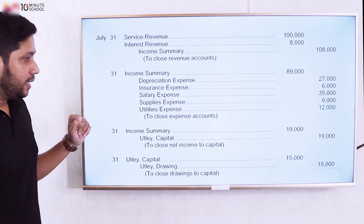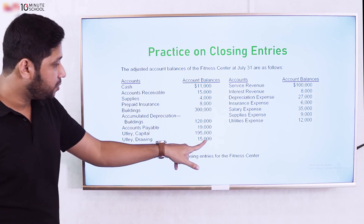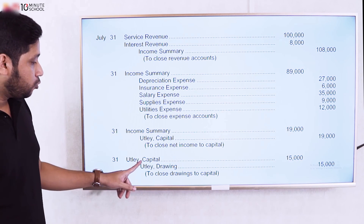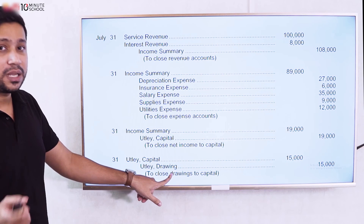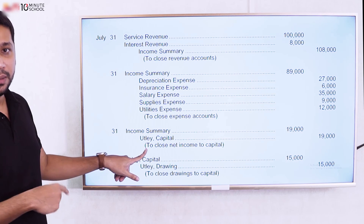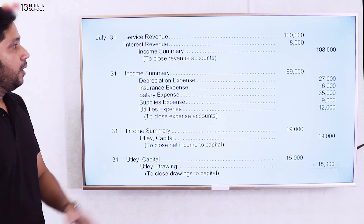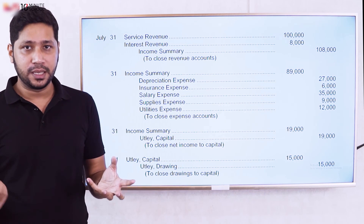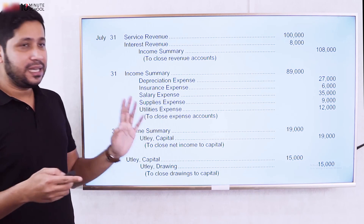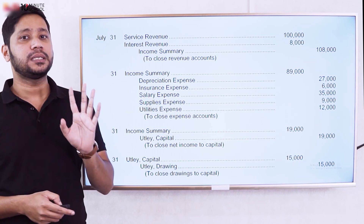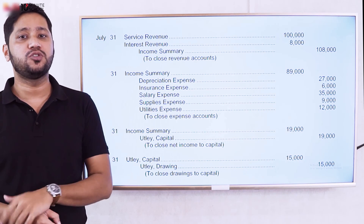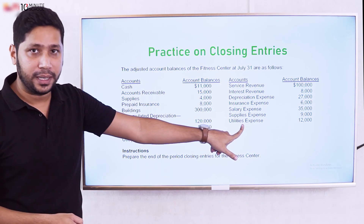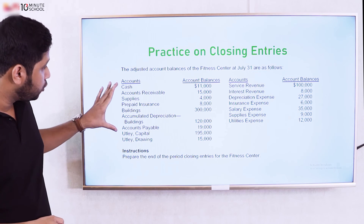Lastly, we transfer the withdrawals to capital. For example, if withdrawals are $15,000, we debit capital and credit the withdrawals account for $15,000. This closes the withdrawals account and completes all four steps of the closing entries.